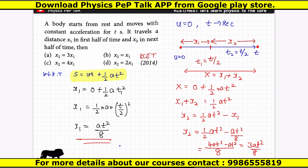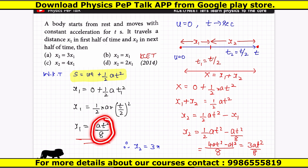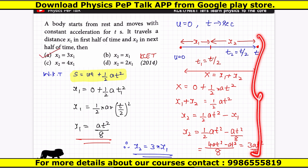Therefore x2 = 3 × (at²/8) = 3 × x1. So x2 is equal to 3 times x1. Option A is the right answer. Now you can see how straightforward it is once you understand the approach.